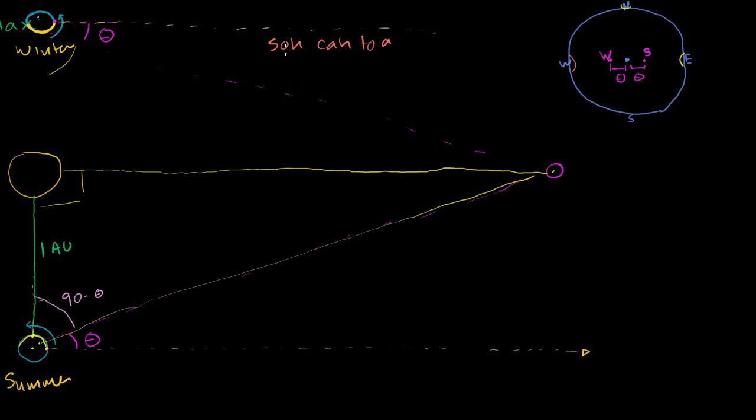SOHCAHTOA. Sine is opposite over hypotenuse. Those aren't the two we care about. Cosine is adjacent over hypotenuse. We don't know what the hypotenuse is, and we don't care about it just yet. But a tangent is the opposite over the adjacent. So if we take the tangent of the angle, if we take the tangent of 90 minus theta, this is going to be equal to the distance to the star.